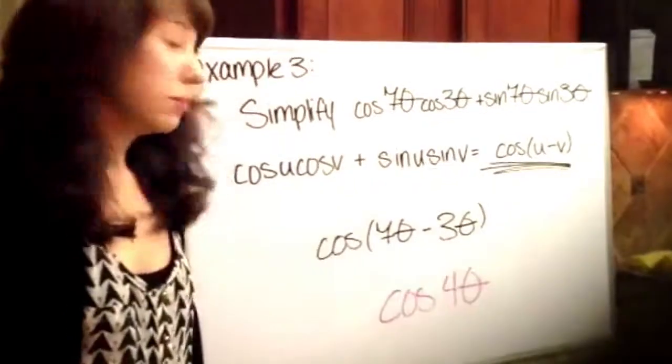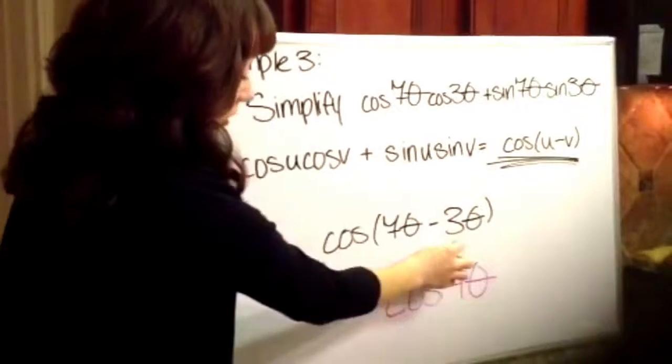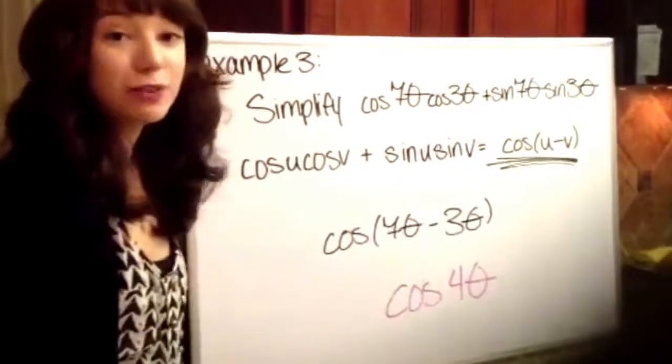So it's very simple and you just take your u and your v, your 7 theta and your 3 theta, and you're going to subtract them. So you get cosine 4 theta as your answer.